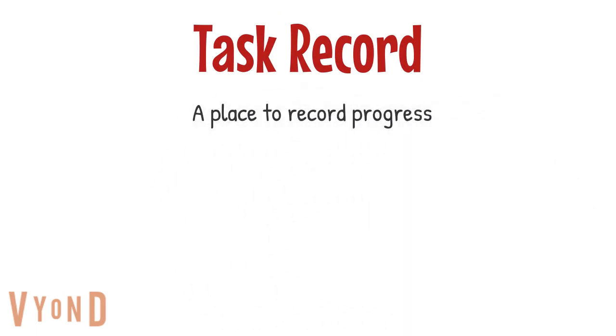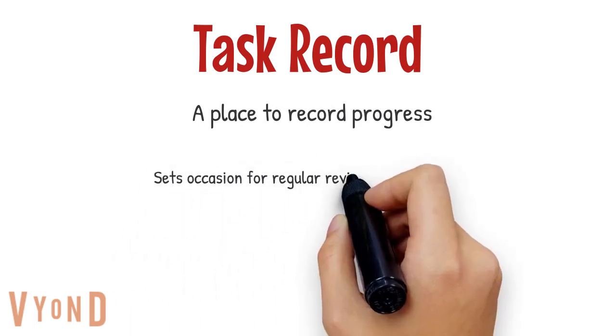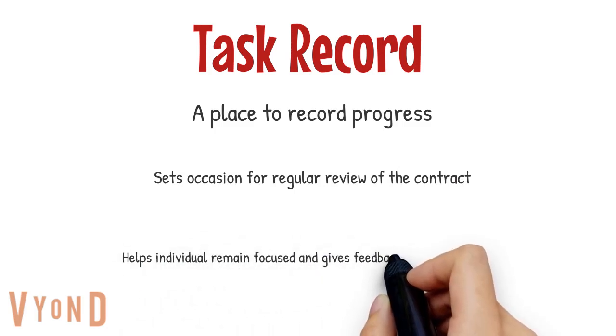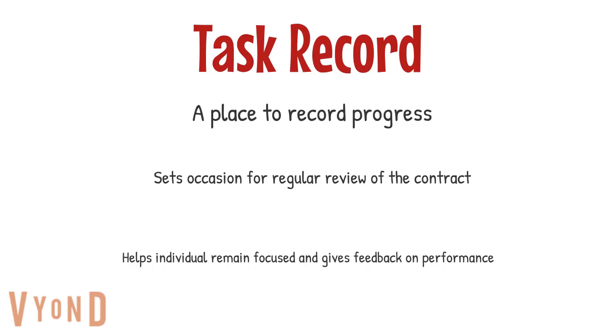The last component of a contingency contract is the task record, which is where you record progress. It helps to regularly review the contract and helps those involved to remain focused and gives them feedback on their performance.